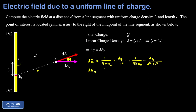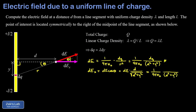Since all y components cancel, we only need the x component: dE_x equals dE times cosine theta. The cosine of theta is the adjacent over the hypotenuse, which is d over r, i.e., d over the square root of d squared plus y squared. Multiplying dE by this fraction gives d squared plus y squared to the three-halves power in the denominator. Substituting dq equals lambda dy, and writing the constants out front as lambda times d over 4 pi epsilon zero, we get the integrand dy over (d squared plus y squared) to the three-halves.